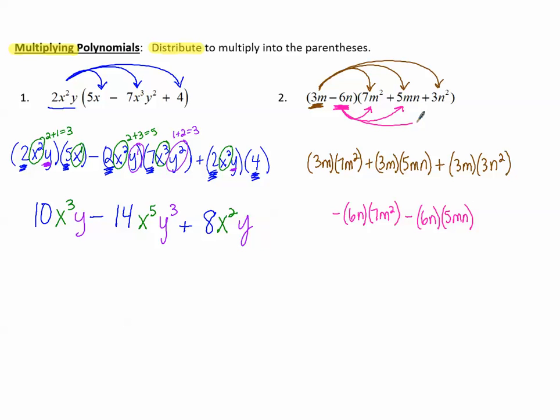And then -6n times positive 3n². So -6n times 3n². And now we can do some simplifying. So 3 times 7 makes 21. m times m². This is a little 1 exponent. And 1 plus 2 makes 3. So m³.